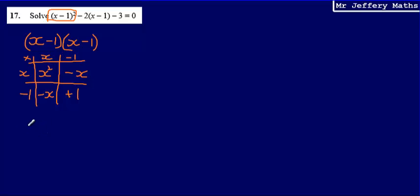So collecting all of this together, this first part of my equation, and I'm just going to write this out underneath, is going to be x squared minus x minus x for minus 2x. And then plus 1. So that's that first part of the equation dealt with.